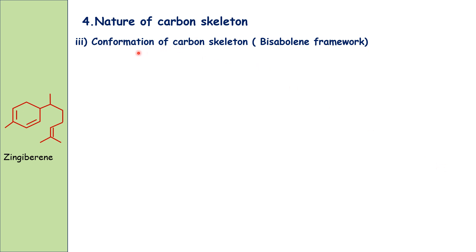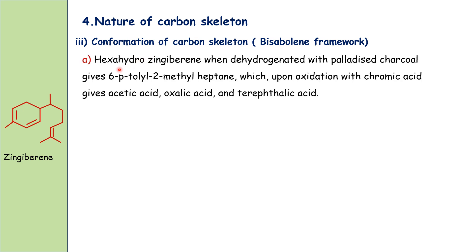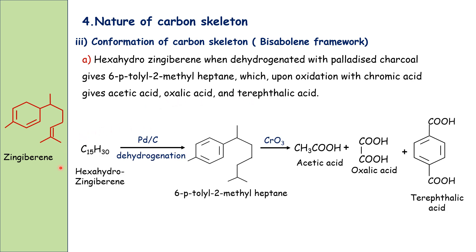Confirmation of carbon skeleton: hexahydrogingivirine, when dehydrogenated with palladized charcoal, gives 6-para-tolyl-2-methylheptane, which upon oxidation with chromic acid yields acetic acid, oxalic acid, and terephthalic acid. These products further confirm the carbon skeleton of gingivirine.